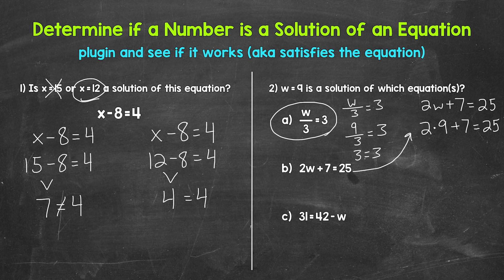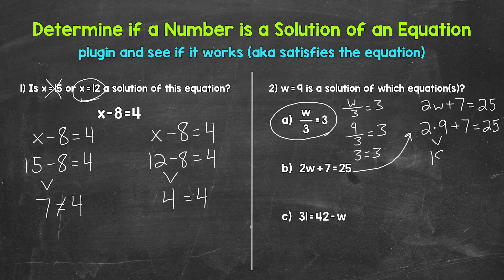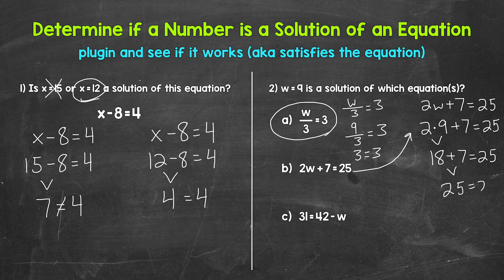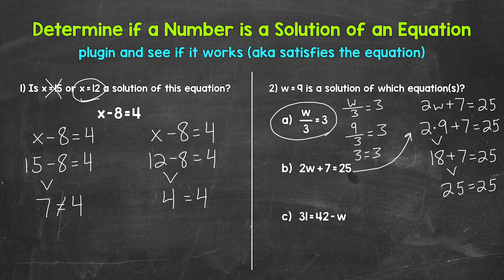We have multiplication and addition here. So we need to multiply first. Two times nine is 18 plus seven equals 25. 18 plus seven is 25. So this does equal 25 when w equals nine. So nine is a solution of this equation.